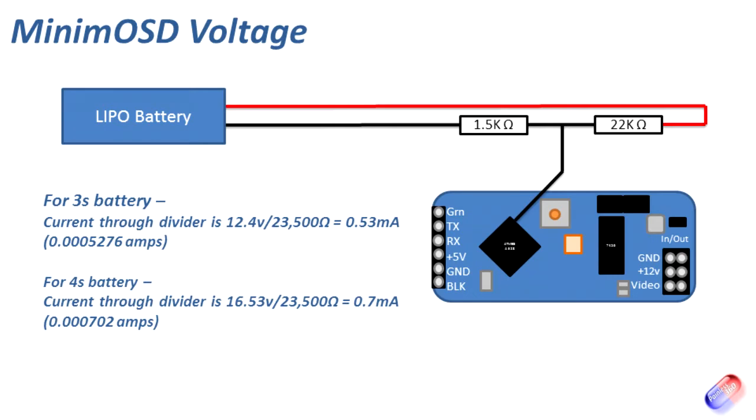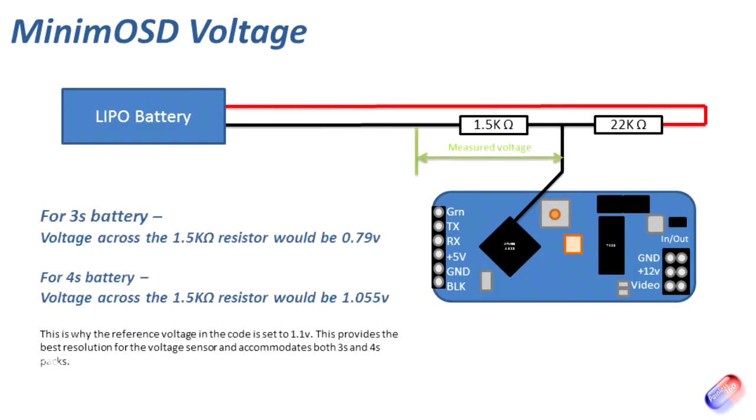If we look at the next slide, the way this works is that the internal reference voltage that you'll see in the code is 1.1 volts. The reason for that is because this resistance bridge will actually divide the voltage so across the 1.5 kilohm resistor, which is what we're measuring across, on a 3s battery a fully charged 3s battery would give us about 0.79 volts across that, and a 4s battery would give us about 1.055 volts across that resistor. The MinimOSD is actually comparing that voltage that it can see across that resistor with the 1.1 reference voltage and using that to figure out what the voltage is at the battery and then putting that on the screen. If none of that made sense don't worry about it, it's just for those of you who are interested about why 1.1 volts is used and how it all works.